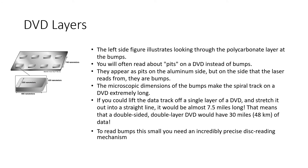You will often read about pits on a DVD instead of bumps — they appear as pits on the aluminum side, but on the other side the laser reads from bumps. The microscopic dimensions of the bumps make the spiral track of a DVD extremely long. If you could lift the data track off a single layer DVD and stretch it into a straight line, it would be almost 7.5 miles long. A double sided, double layer DVD would have 30 miles or 48 kilometers of data.